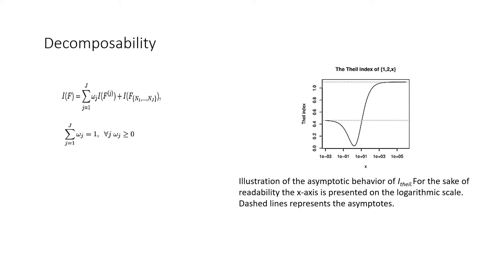This is the graph of the Thiel Index, and this graph is about the asymptotic behavior. For the x-axis, it is presented in the logarithmic scale, and these are the asymptotes.